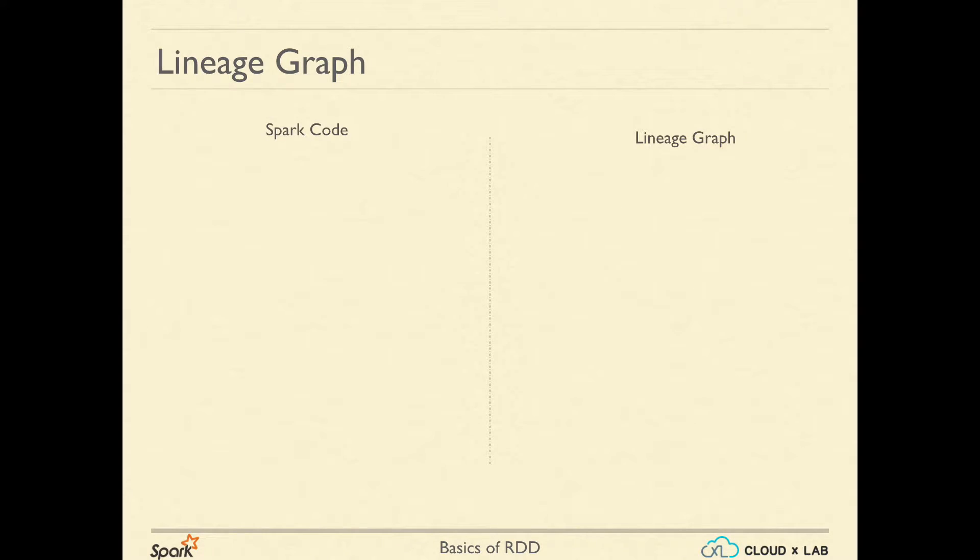To support lazy evaluation, an RDD keeps information from which other RDD it needs to be computed and which transformation to apply. This information is stored in the form of a graph. Every time we define a transformation, it keeps building this graph.